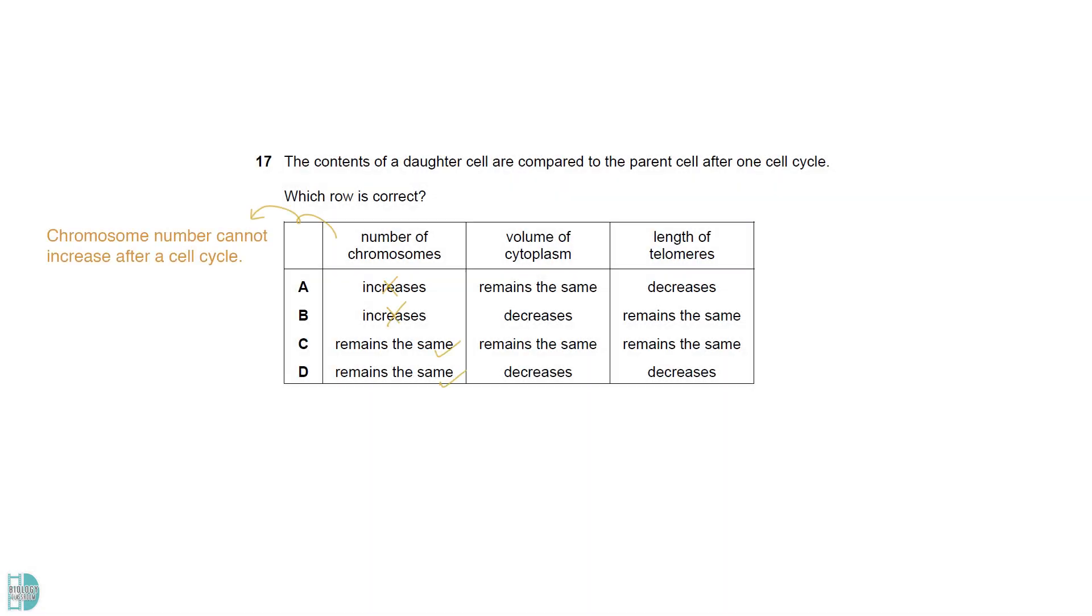The chromosome number cannot increase after a cell cycle. The volume of cytoplasm decreases after cytokinesis. It will increase again in the next interphase.